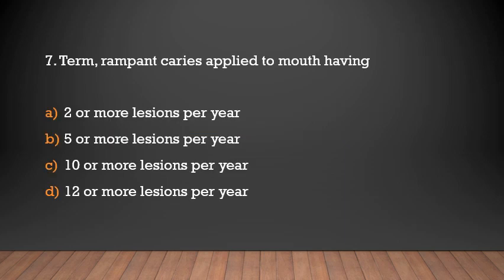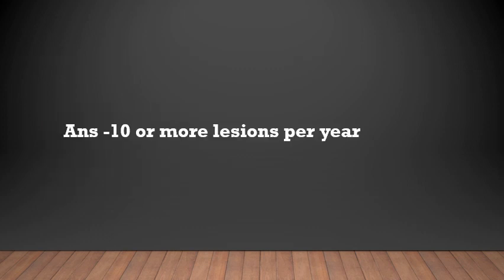The term rampant caries is applied to a mouth having how many lesions per year? Options: 2 or more, 5 or more, 10 or more, or 12 or more lesions per year. Answer: 10 or more lesions per year.